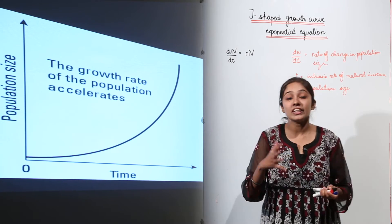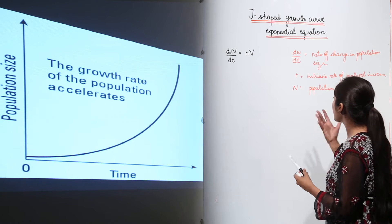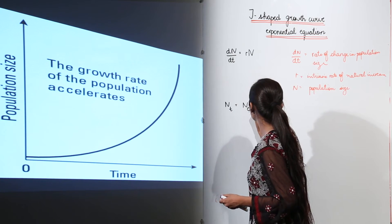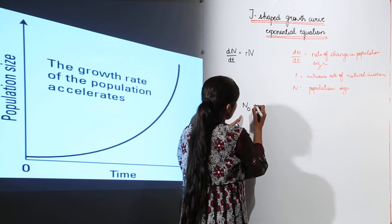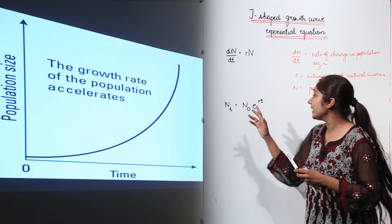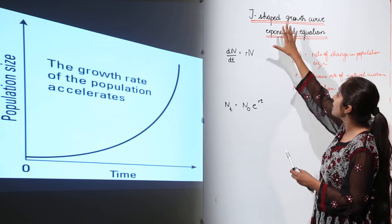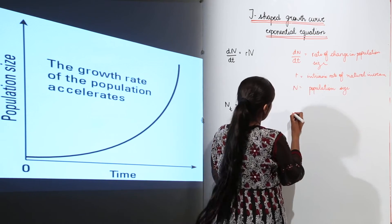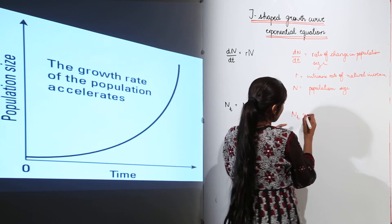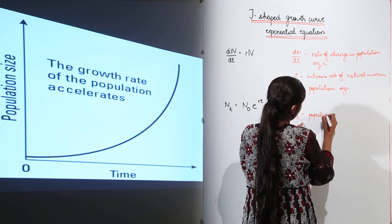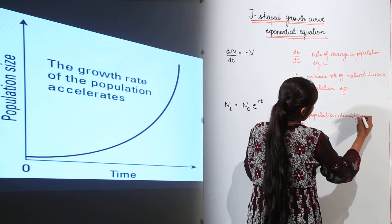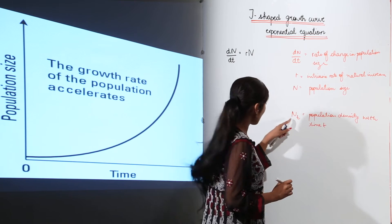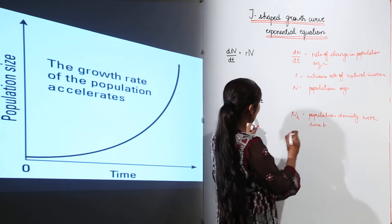We can also write this equation in integral form. When written in integral form, the equation becomes Nt equals N0 times e to the power rt. This is the integral form of the equation for the J-shaped growth curve. Nt means population density at time t.